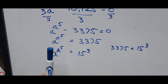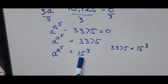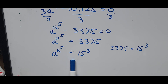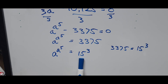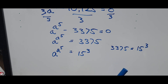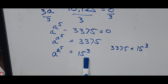From here, we investigate both sides. On the left we have a raised to a raised to the fifth power, and on the right we have 15 raised to the third power. We want to find a common base structure where the base equals the exponent, the same pattern as a raised to a on the left. Since the base is 15, we want the exponent to also be 15, so we are aiming for 15 raised to the 15th power on the right.